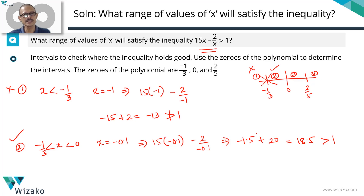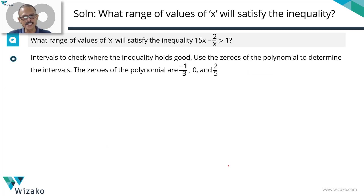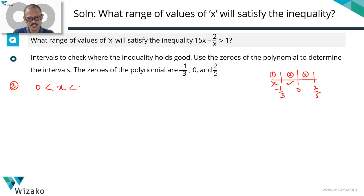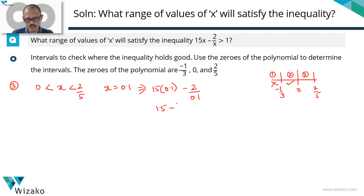Moving to the third interval — x between 0 and 2 by 5 (which is 0.4) — we plug in x equals 0.1. The expression becomes 15 times 0.1 minus 2 divided by 0.1. That's 1.5 minus 20, giving minus 18.5. Minus 18.5 is definitely not greater than 1, so the inequality fails in the third interval. The third interval is not part of our solution set.